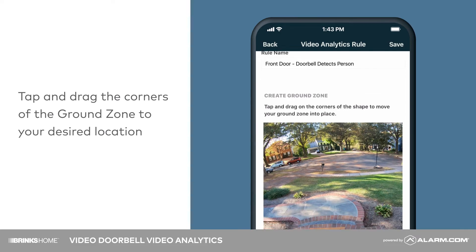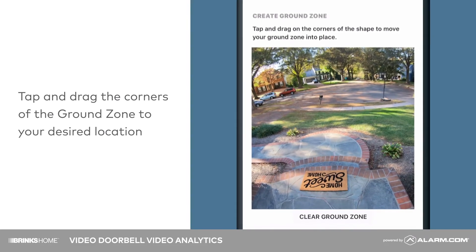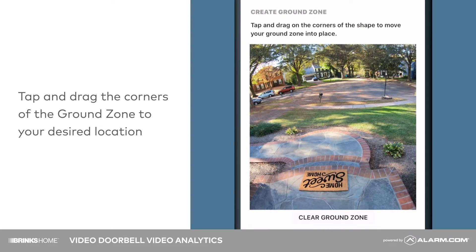Next, configure the ground zone. Tap to create points and connect them to finalize your ground zone so that the interior is green. You can drag your points to adjust the shape.